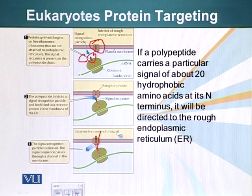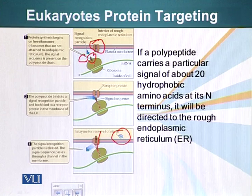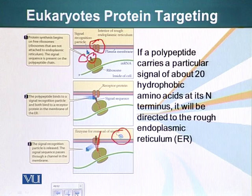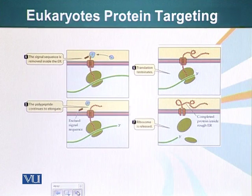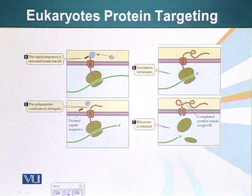There are special enzymes inside the ER that can recognize that special signal sequence and cleave it off when the protein is injected into the ER. In this case, it is about 20 hydrophobic amino acids at the N-terminus of that protein. After the signal sequence has been cleaved, the protein is injected into the ER, and the ER will have enzymes that chemically modify this protein and send it onwards to the Golgi.